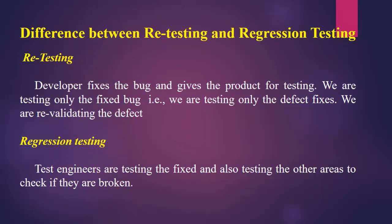The differences between retesting and regression testing: In retesting, the developer fixes the bug and gives the product for testing — we are testing only the fixed bug, revalidating the defect. It is planned testing and we do not use automation. Retesting takes the highest priority. In regression testing, test engineers test the fixed areas and also test other areas to check if they are broken.